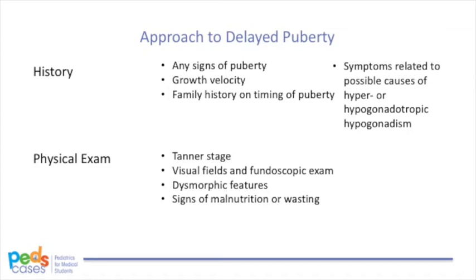It can also be helpful to ask questions directed at possible causes of hypogonadotropic and hypergonadotropic hypogonadism. If suspecting hypergonadotropic, we can ask about the gonads — for example, if there was ever any irradiation or mumps. If suspecting hypogonadotropic, we can ask about symptoms of undernutrition, chronic illnesses, and intracranial pathologies. On physical exam, we should confirm pubertal staging using Tanner staging of breast development and pubic hair in girls, and genital development and pubic hair in boys. Visual fields and fundoscopic exam are recommended to rule out a cerebral mass, and we can look for dysmorphic features or signs of malnutrition.